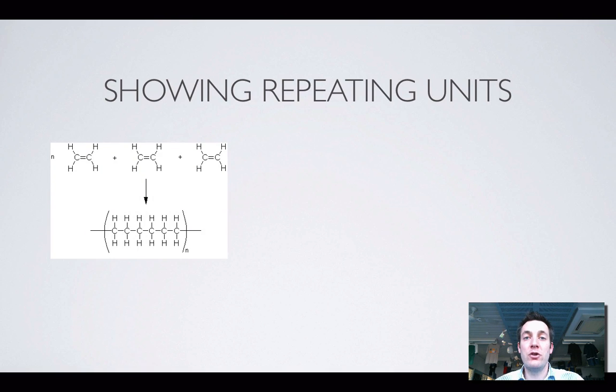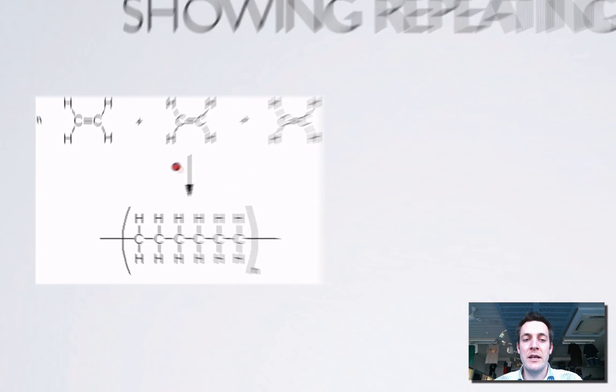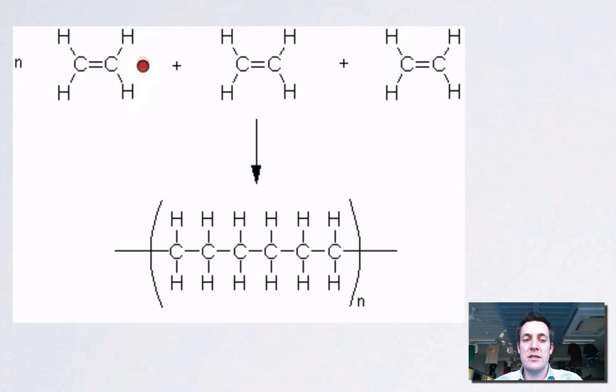Now, if we're asked to show the repeating unit in an exam, what we're basically doing is we're representing the polymer chain without drawing all of it, which is great because, as I say, it can be millions of atoms long so that could be potentially a life's work of just drawing one molecule. What we're doing here is we're taking these ethene molecules and making a polymer called polyethene. That's often used in plastic bags and stuff like that. A lot of these polymers are plastics.